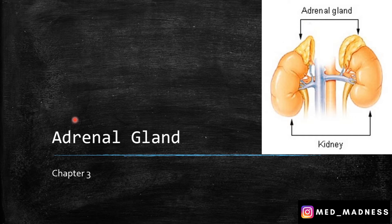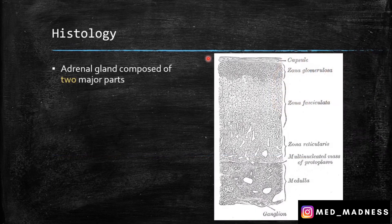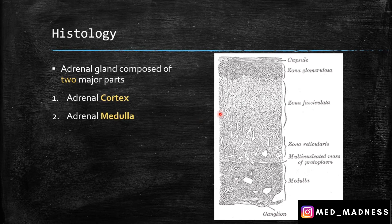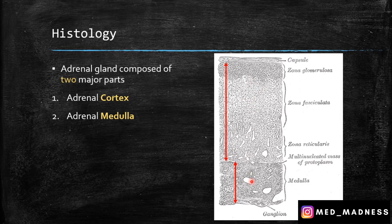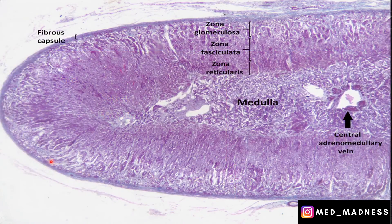This is also known as suprarenal glands because this gland is located at the top of each kidney. The adrenal gland is composed of two major parts: the adrenal cortex and the adrenal medulla. In this picture, you can see the adrenal cortex, which is the outermost, and the adrenal medulla, which is the innermost. In this light microscopy picture of the adrenal gland, you can notice the fibrous capsule, followed by the cortex and the medulla, the innermost structure.